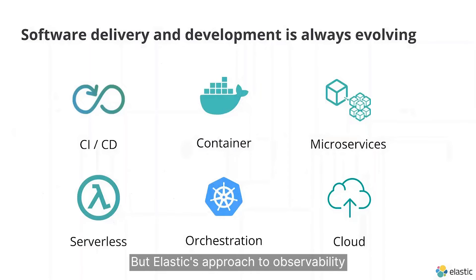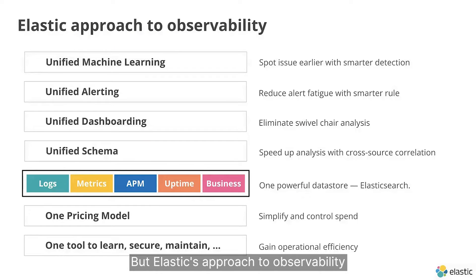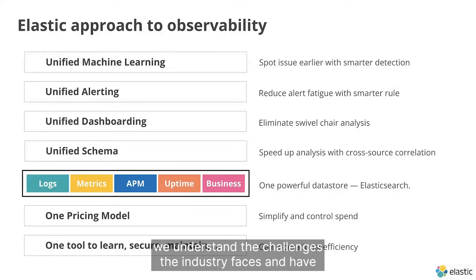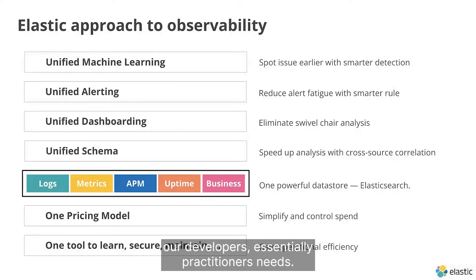Elastic's approach to observability is through the lens of the customer. With our strong developer and open source community background, we understand the challenges the industry faces and have come up with a platform that addresses customers', developers', and essentially practitioners' needs.